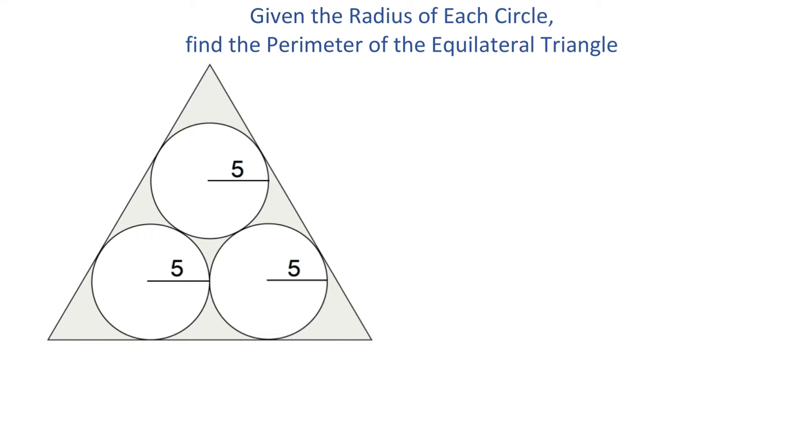How can we find the perimeter of this equilateral triangle given three equal circles, each with radius of 5 units?